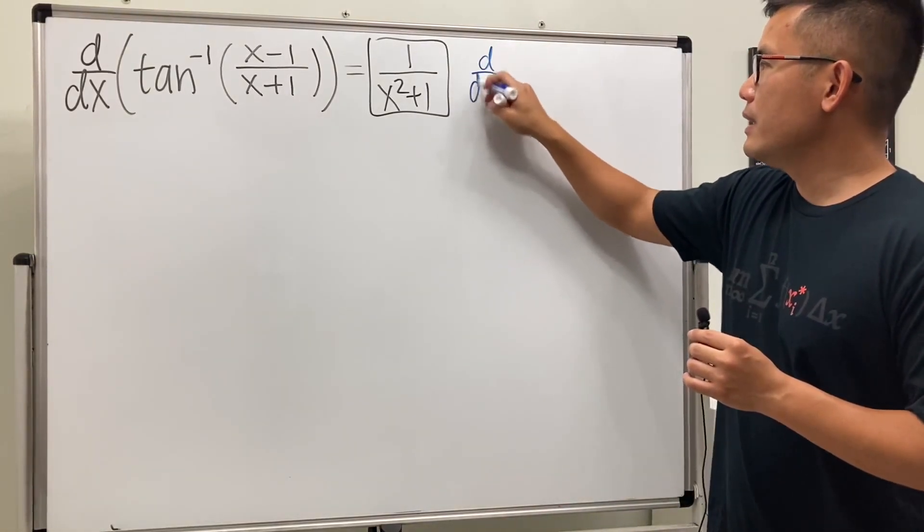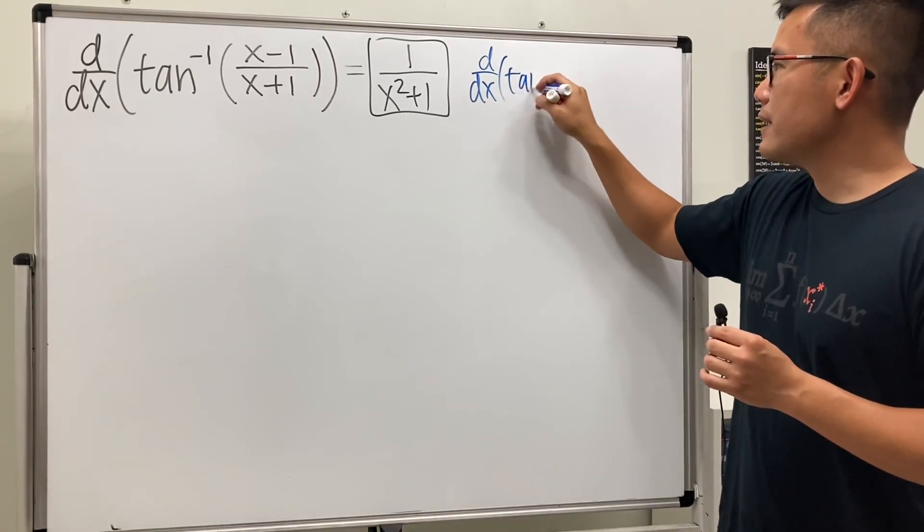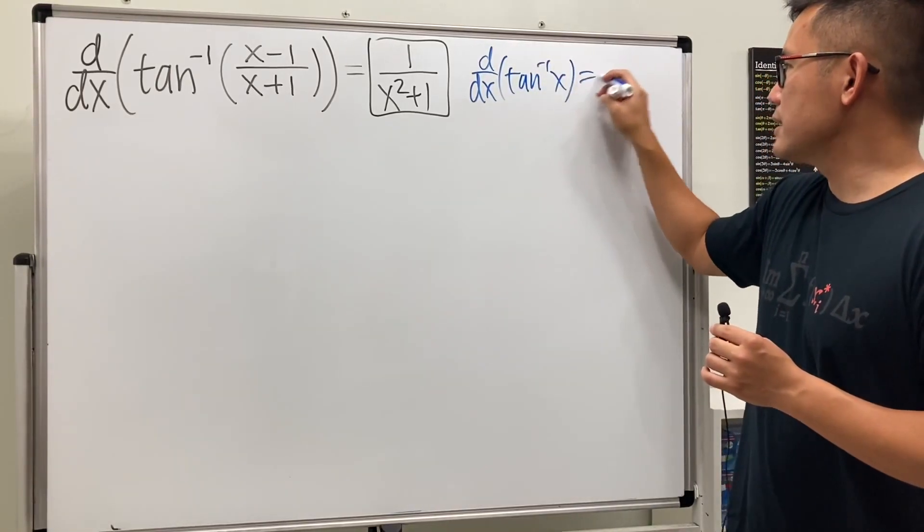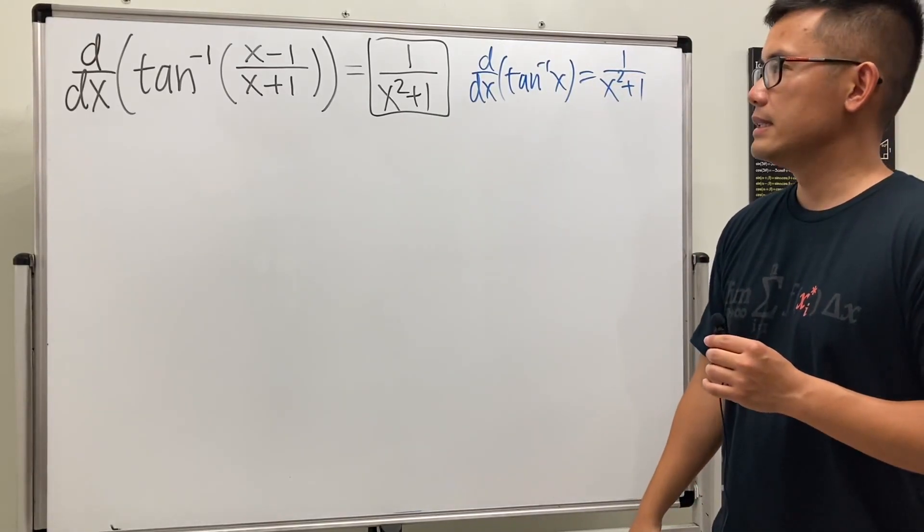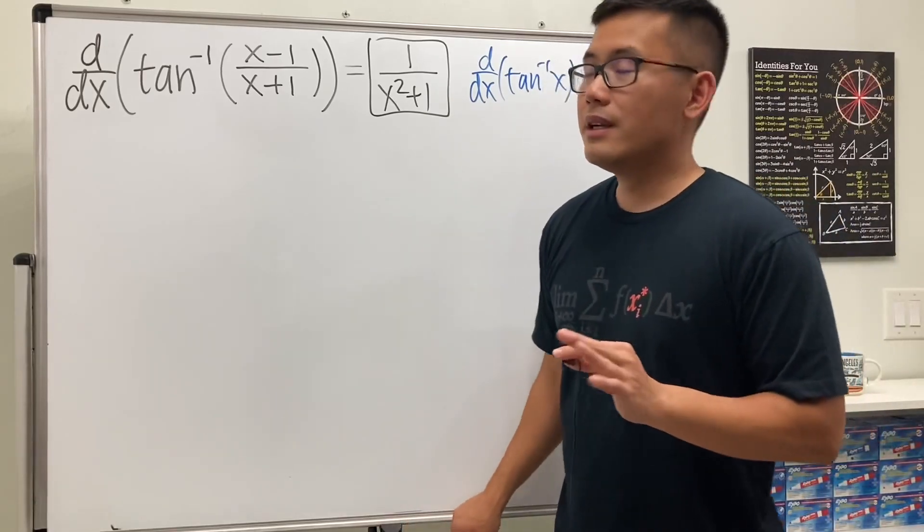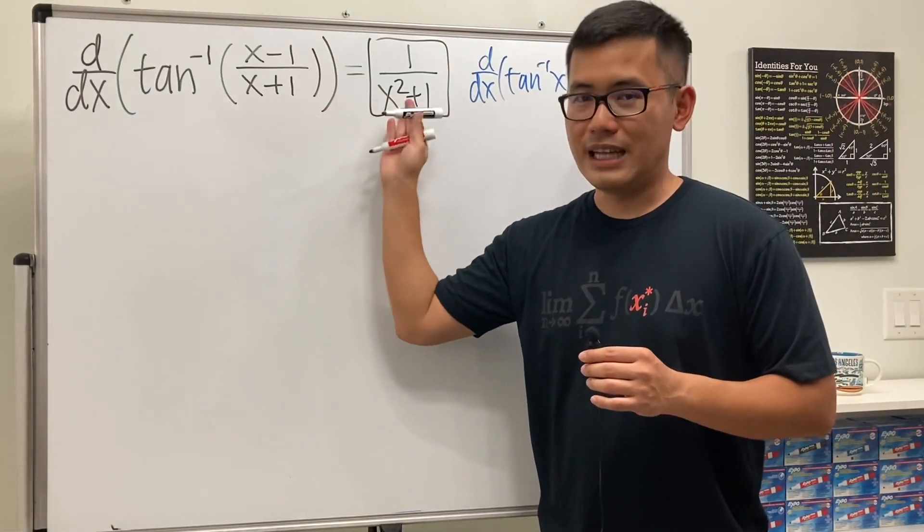Now, this right here, we know that the derivative of inverse tangent of just x, this is the one that should give us 1 over x squared plus 1, right? But anyway, let me just show you guys that this right here will indeed give us that for the answer.